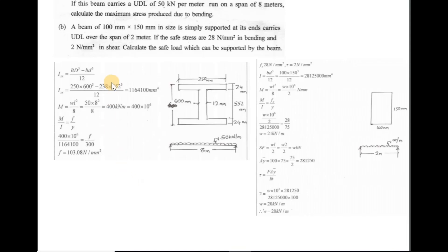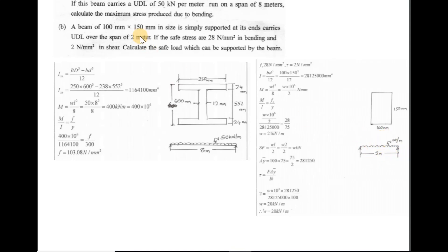A beam of 100 mm × 150 mm cross-section is simply supported at its ends and carries a UDL over a span of 2 metres. The safe bending stress is 28 N/mm² and the safe shear stress is 2 N/mm². Calculate the safe UDL the beam can support. We apply two considerations — bending and shear — and take the lesser result as the safe load.